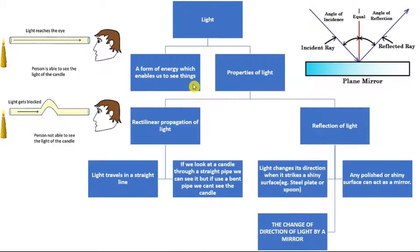Light is a form of energy which enables us to see things. The properties of light include the rectilinear propagation of light - light travels in a straight line.